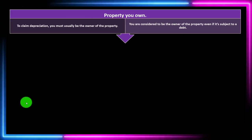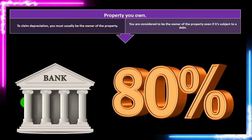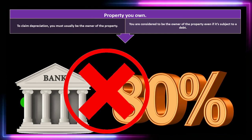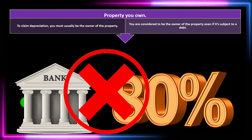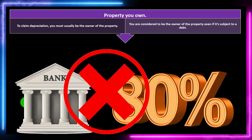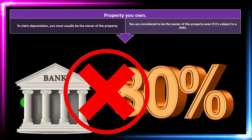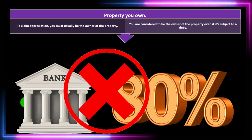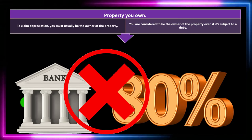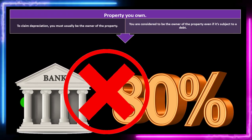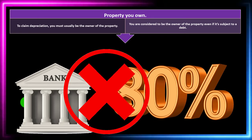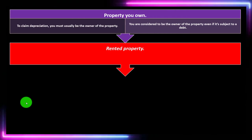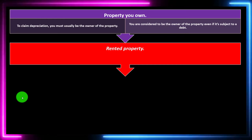To claim depreciation, you must usually be the owner of the property. You are considered to be the owner even if the property is subject to a debt. Even though you have a loan with the property as collateral, you own the home — the bank has recourse if you default on the loan payment, but they have no say on what you do with the home unless that happens.